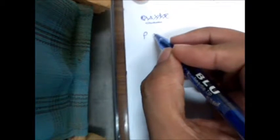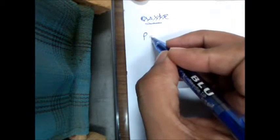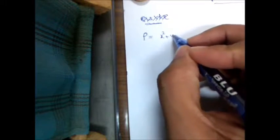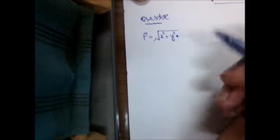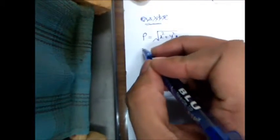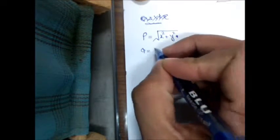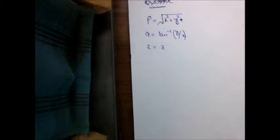Rho can be calculated directly from Cartesian coordinates as the square root of x squared plus y squared. Phi can be calculated as the inverse tangent of y over x, whereas z of the cylindrical coordinates is the same as the z of the Cartesian coordinate system.